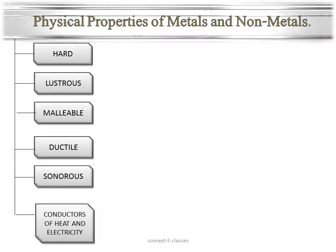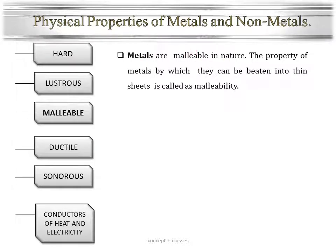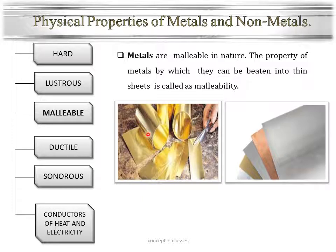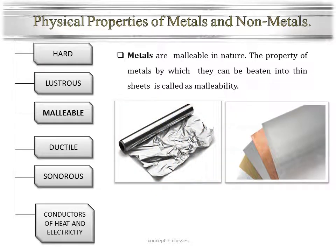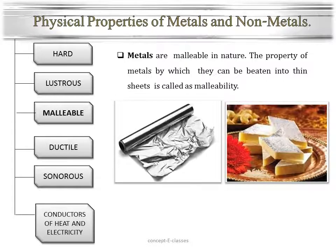The third physical property is malleability. Metals are malleable in nature. Have you ever seen a blacksmith beating an iron piece and making it into a shovel or spade? While beating, the piece changes its shape, and if beaten even harder, we can change it into thin sheets. This property of metals by which they can be beaten into thin sheets is called malleability. We are also familiar with aluminium foil used for wrapping food and silver foil used to decorate sweets — these are examples of malleability. But if you try beating a nonmetal such as coal, it will break into a powdery mass. So nonmetals are not malleable in nature.